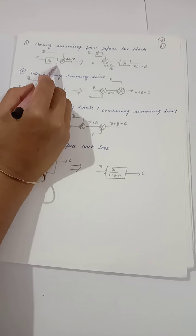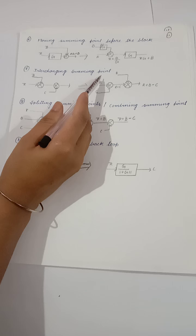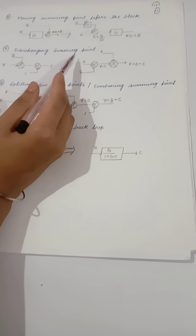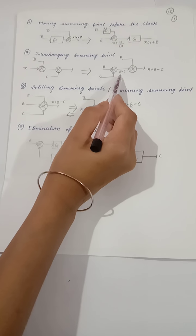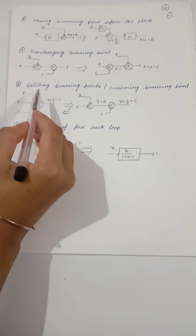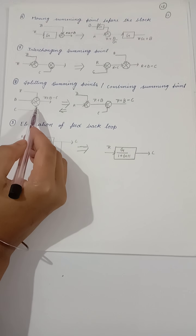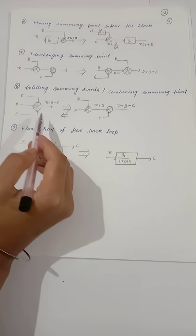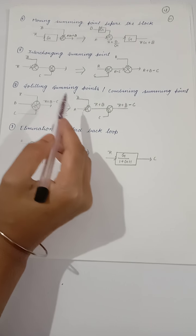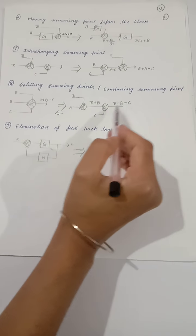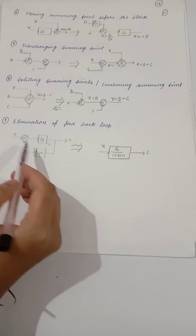For the seventh rule, interchanging summing points: if we have two summing points, we can interchange them. For the eighth rule, combining summing points: if you have a summing point with inputs R, B, and C, the output is R plus B minus C.